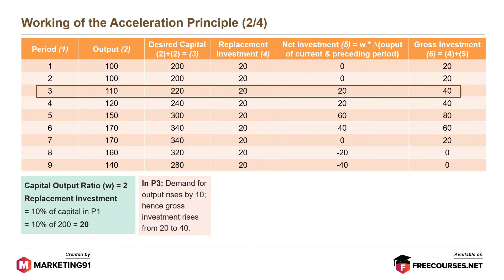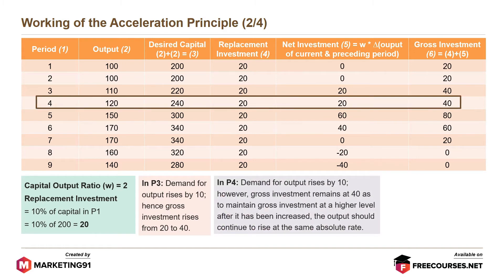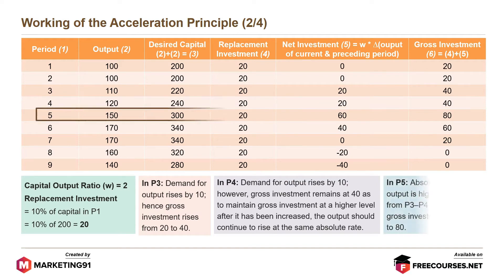In P-3, the demand for output rises by 10; therefore, gross investment rises from 20 to 40. In P-4, the demand for output also rises by 10; however, gross investment remains at 40 as in P-3. This is because to maintain gross investment at a higher level after it has been increased, the output should continue to rise at the same absolute rate.